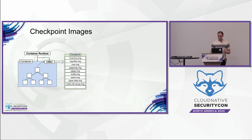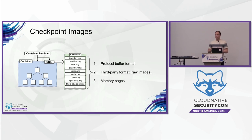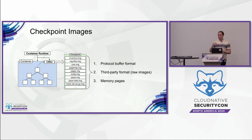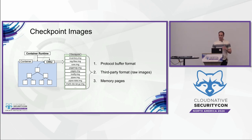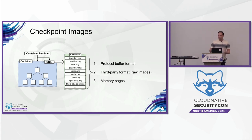There are many different types of images — about 50 or 60 — but they can be grouped into three categories. The first is images in protocol buffer format, which have a definition specifying the fields in every image. The second is images in third-party format or raw images, created with an external tool such as TAR for checkpointing a temporary file system, or IP tables or IP routes. The third type are memory pages, which is essentially the application memory stored in binary format.